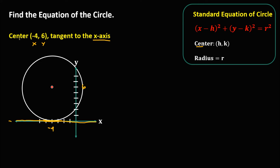To find the equation of the circle, from the given center, h is negative 4 and k is positive 6. For the radius, from the center of the circle to any point on the circle, we count 1, 2, 3, 4, 5, 6. So the radius is equal to 6.